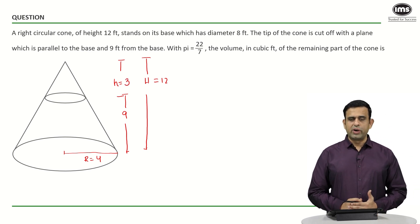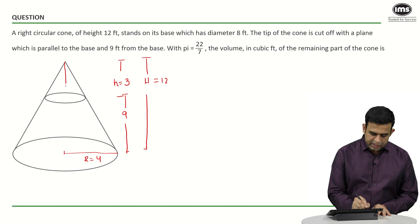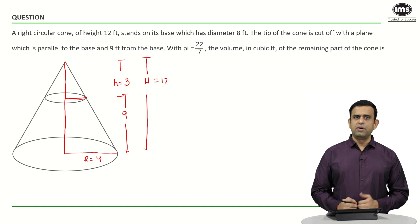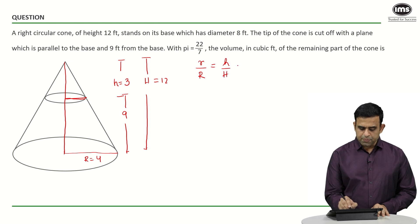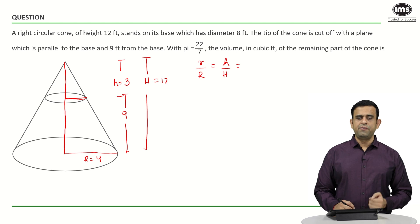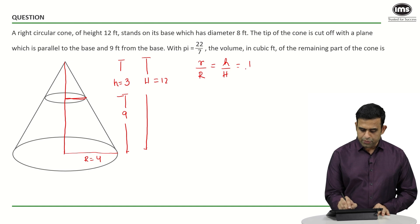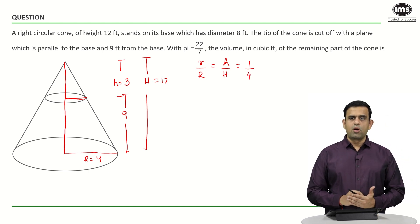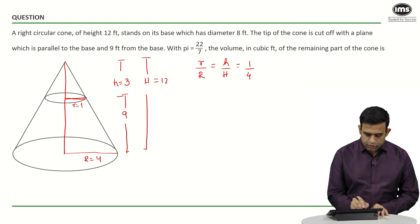There are two ways to solve this question. In the first method, we look at the smaller cone and the bigger cone. The two triangles are similar, so the ratio of their sides is in the same proportion. We can say small r divided by capital R equals small h upon capital H. Since the smaller cone has height 3 and the bigger cone has height 12, this ratio is 3 by 12, or 1 by 4. So the radius of the smaller cone is one-fourth of 4, meaning small r equals 1.